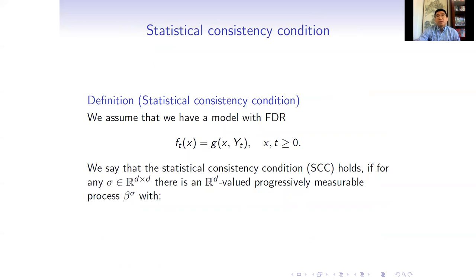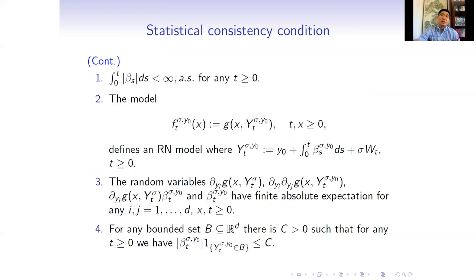The example above gives us some intuition on energy futures modeling. Then, we introduce the statistical consistency condition. Basically, we say that statistical consistency condition for a given function g means that, for every possible constant volatility, there is an iterative process with a given volatility, which will lead to an RN model if we take it into the curve. This is motivated from the fact that we would like to estimate the volatility from data and our model should work with whatever volatility we get out of the estimator.